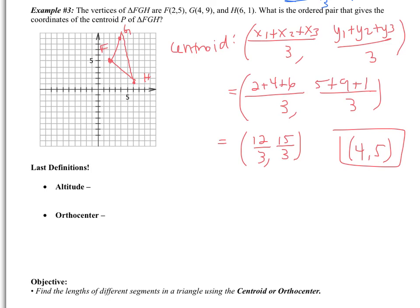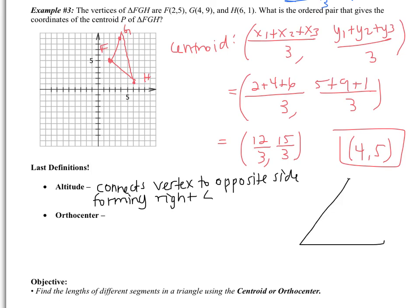Last thing, last two definitions. An altitude connects a vertex to the opposite side, forming a right angle. So vertex to opposite side forms a right angle. Orthocenter is the point of concurrency of the three altitudes. So it's just the point where the three altitudes meet. Nothing important about that we're going to learn. All you need to know is that the orthocenter is where the altitudes intersect.